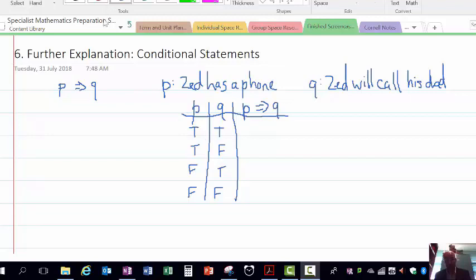With the first case in the first row, Zed had a phone and Zed called his dad, so that would be true. That's naturally linking those two statements together quite naturally, and that's true.